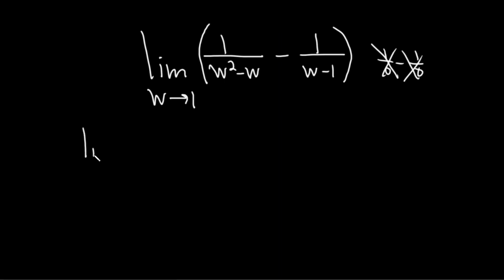This means we need to try something else, and that something else is going to be subtracting. So in order to subtract these, we need to find a common denominator. You'll notice here that the bottom is w squared minus w, so we can factor out a w. So this is 1 over w, parentheses, w minus 1, parentheses, and this is minus 1 over w minus 1.